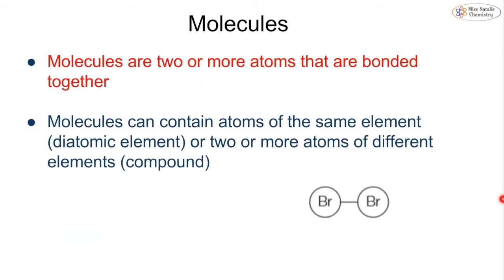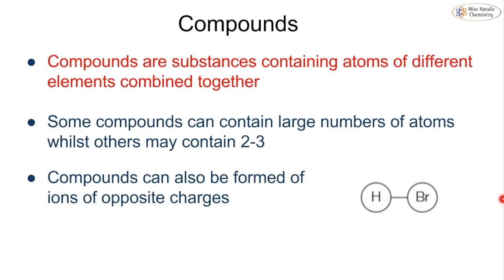Molecules are two or more atoms bonded together, typically covalently bonded. They can be two of the same elements like a diatomic element, remembering our seven diatomics on the periodic table, or atoms of two or more different elements, which we call compounds. Compounds are substances containing atoms of different elements combined together. They may have two or three atoms or hundreds or thousands, and can also be formed ionically of ions of opposite charges.